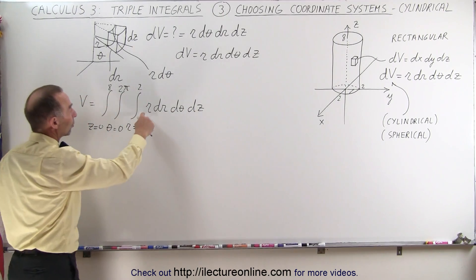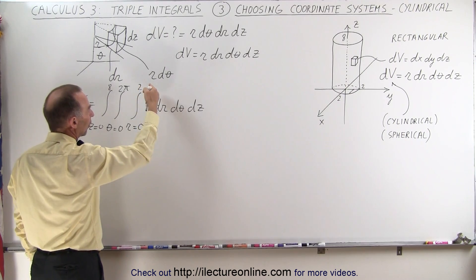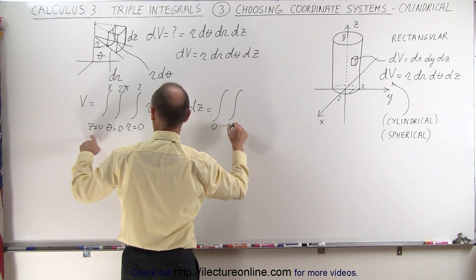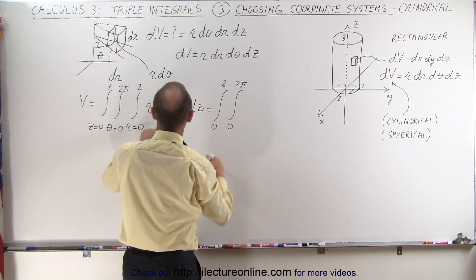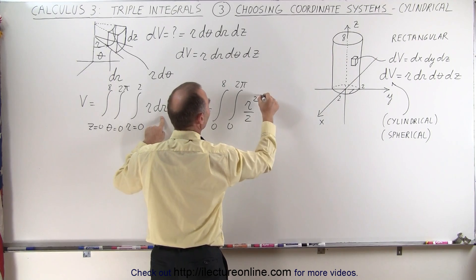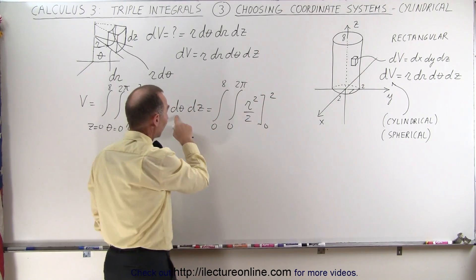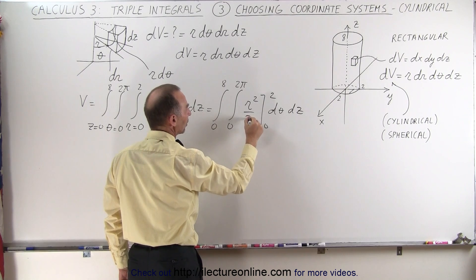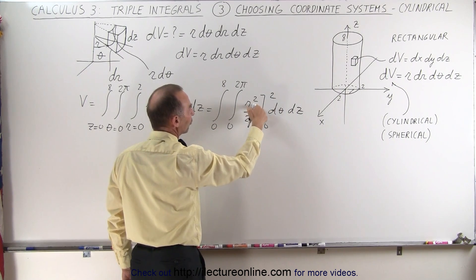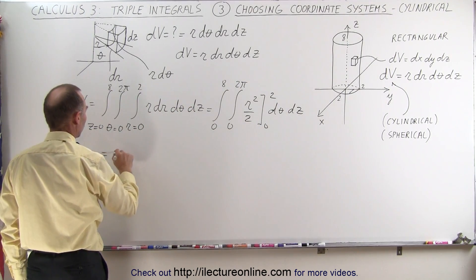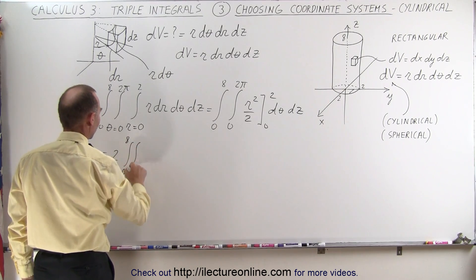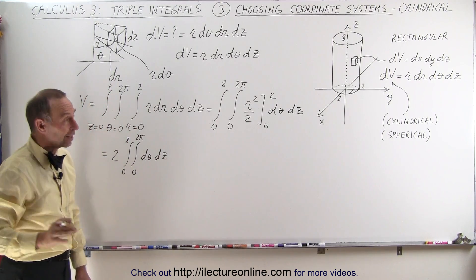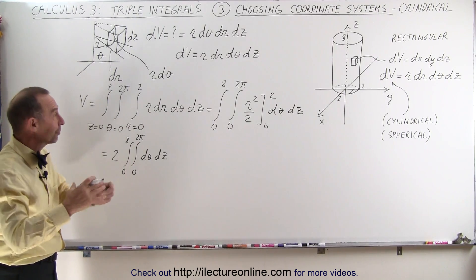Now we're ready to integrate. We start with the integral of r dr, which gives r squared over 2. So this becomes a double integral over z from 0 to 8 and theta from 0 to 2π, with r squared over 2 evaluated from 0 to 2, times d theta dz. Plugging in the limits: the lower limit gives 0, and the upper limit gives 2 squared over 2, which is 2. Notice how much easier this is than using rectangular coordinates to find the volume of a cylinder.